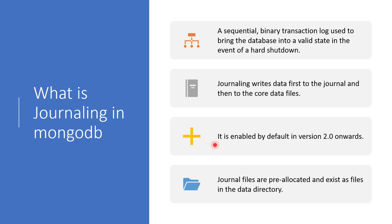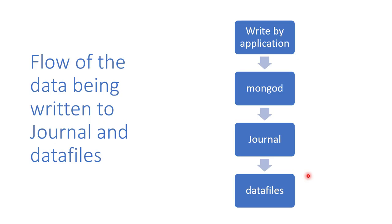If we talk about where journal files are located, they are by default located in the dbpath directory, and they are pre-allocated. This is the flow of the data being written to the journal and the data files.